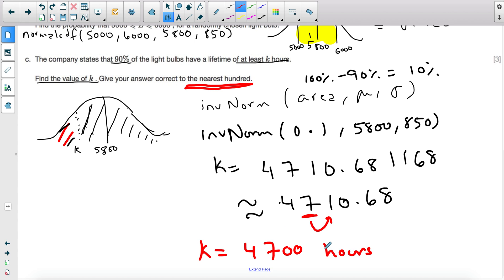And so my final answer is 4,700 hours. So the area above it is 90%. 90% of the light bulbs have at least 4,700 hours.